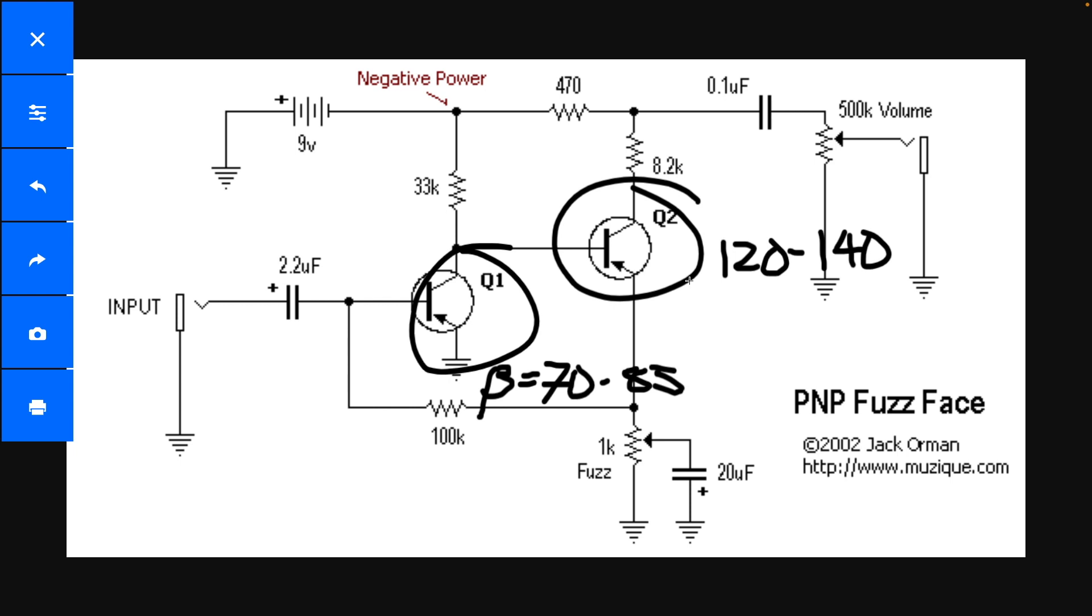And that's for the original style. People build them with higher gain transistors, and I haven't done that personally, but I think when you're doing that, it's important to keep this ratio. Q2 should be a higher gain than Q1.